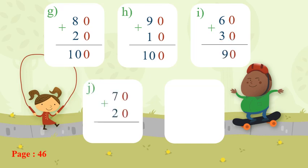Number G: 70 plus 20. Zero plus zero equals zero. Seven plus two — seven on my mind, two on my hand — after seven: eight, nine. The answer will be ninety.